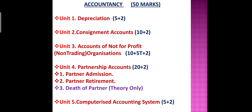Unit number 3 is Accounts of Not-for-Profit Organizations, or non-trading organizations. From this unit, a 10 marks problem, a 5 marks theory question, and a 2 marks short question will come in the examination.